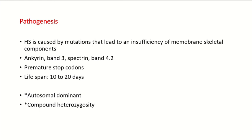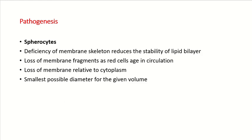Hereditary spherocytosis is caused by mutations leading to insufficiency of membrane skeleton components — it can affect ankyrin protein, Band 3, spectrin, or Band 4.2. This decreases the normal lifespan of RBCs to only 10 to 20 days. The deficiency of membrane skeleton reduces the stability of the lipid bilayer. Loss of membrane fragments leads to a decrease in membrane surface area relative to cytoplasm, which gives the cell the smallest possible diameter for a given volume, forming spherocytes.